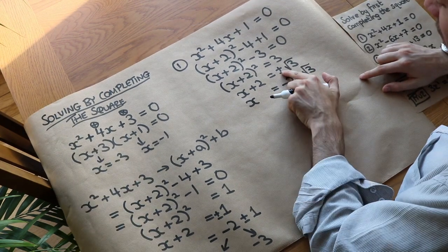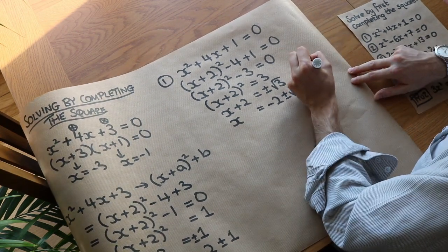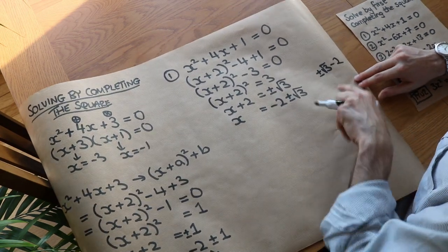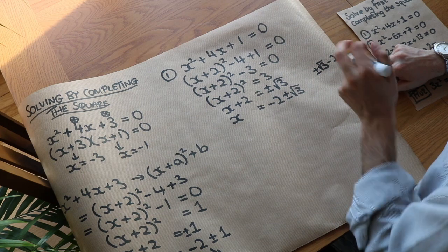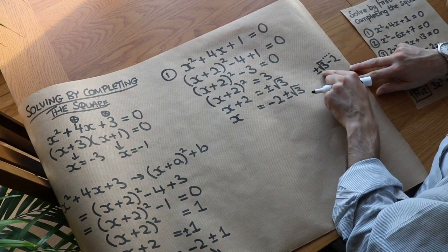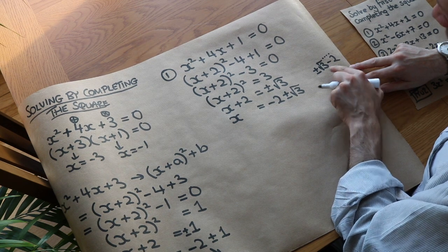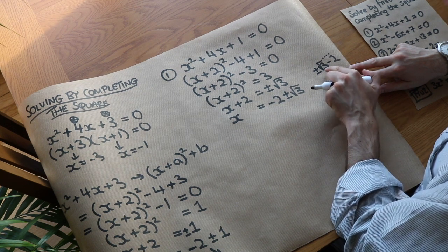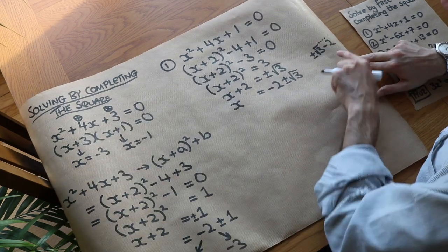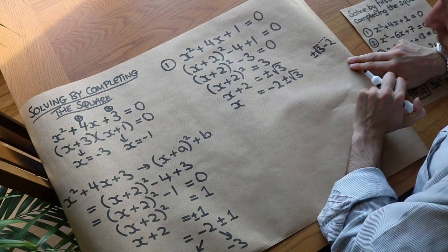You might wonder why I don't write plus or minus root 3 and then subtract 2 after. The reason is, if I write plus or minus root 3 minus 2, there's potential ambiguity — it might look like the square root is over all of that expression. So rather than plus or minus root 3 minus 2, we tend to put the minus 2 at the front, before the plus or minus, to avoid that confusion.